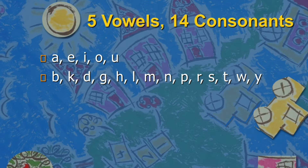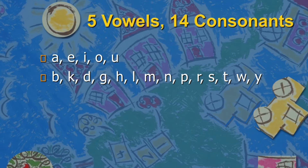Originally, according to historians and linguists, there were only 3 vowels in the Cebuano alphabet: A, I, and U. But since the language is evolving and we are now adopting more words from English, Spanish, and probably other foreign languages, we adopt the international alphabet. We have added the letters E and O.